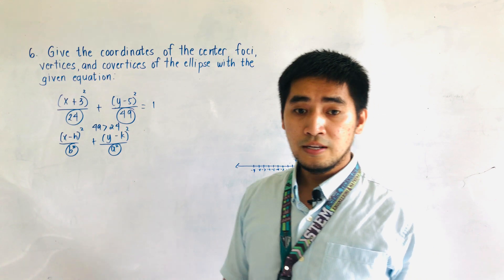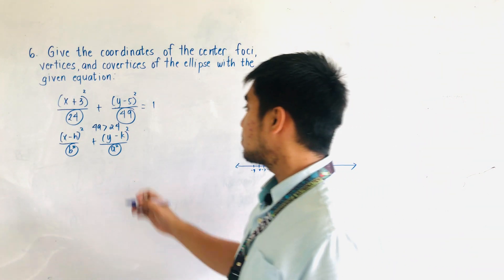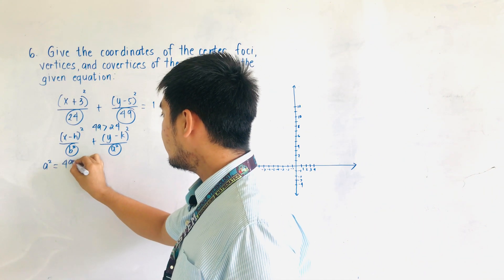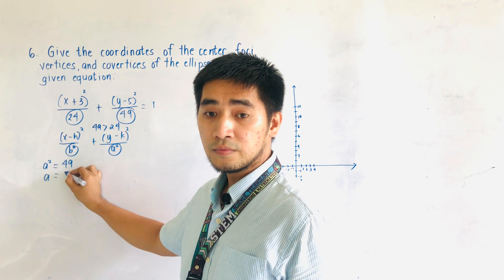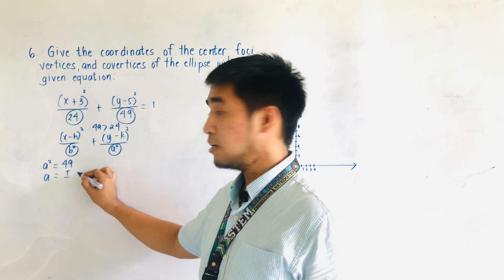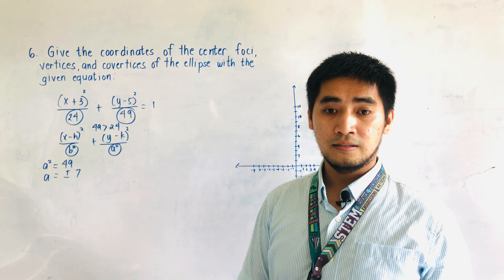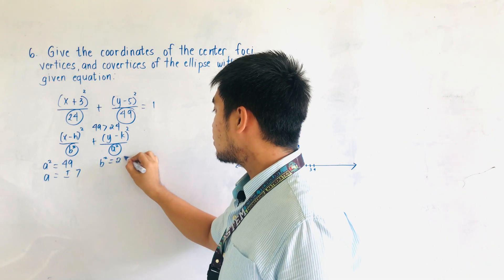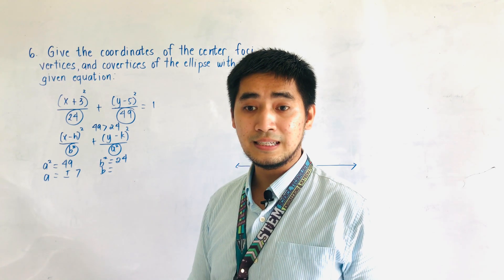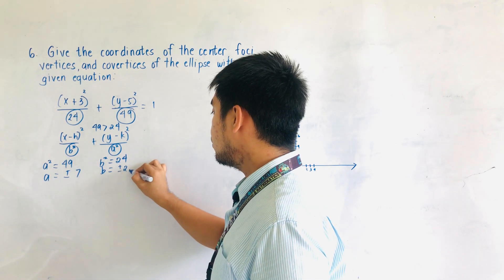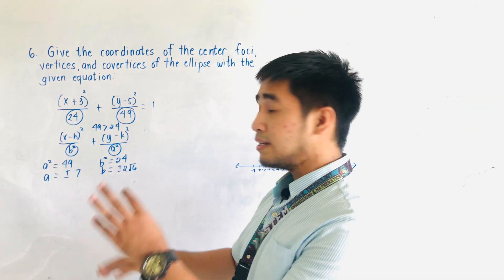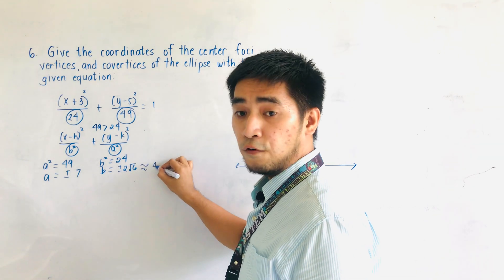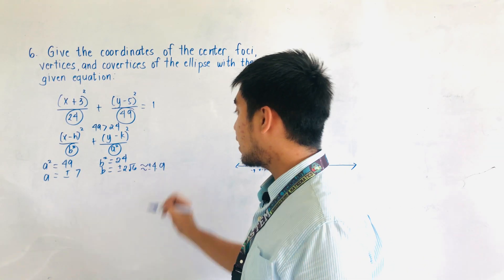Let us now get the value of c. Since a squared is equal to 49, therefore a is equal to plus or minus 7. For b squared, b squared is equal to 24, therefore b is equal to plus or minus 2 square root of 6. Since we need to graph this, we convert to decimal form: that is approximately plus or minus 4.9.